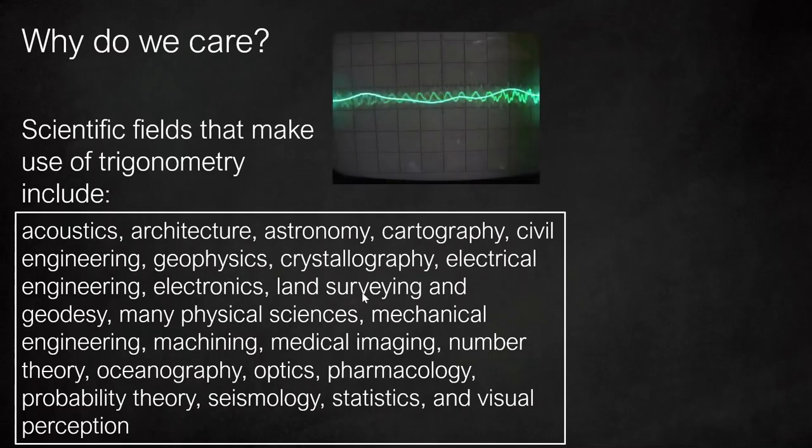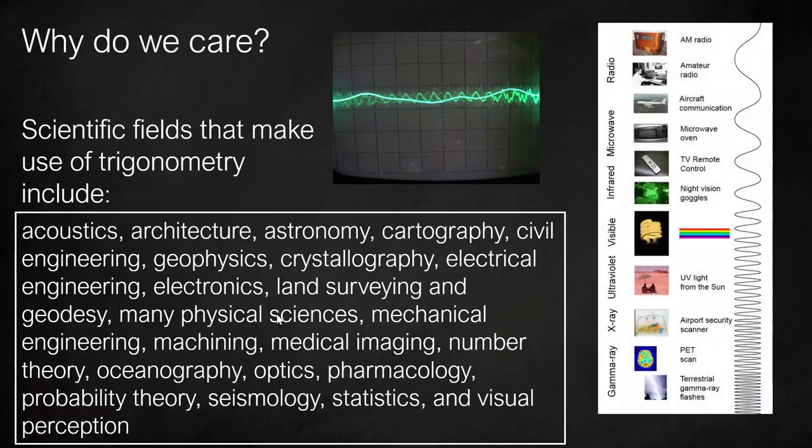A quick Wikipedia search reveals that trig spans across nearly every scientific field. Here's an oscilloscope that shows the wave-like nature of current and also allows you to make measurements. And here is the full electromagnetic spectrum of light, which are all just sine waves with vastly different frequencies.